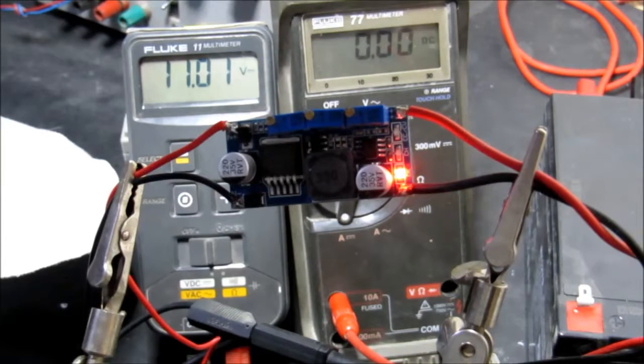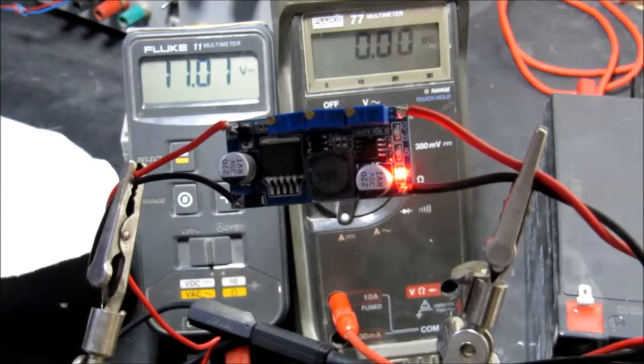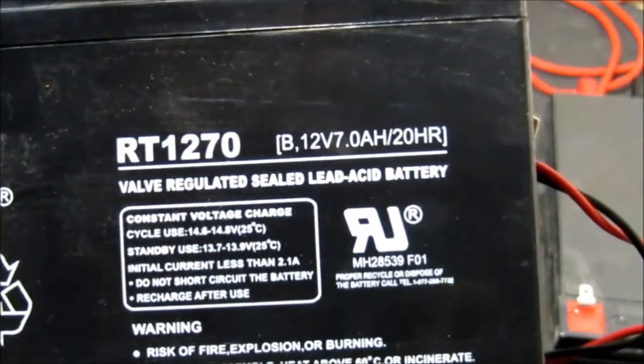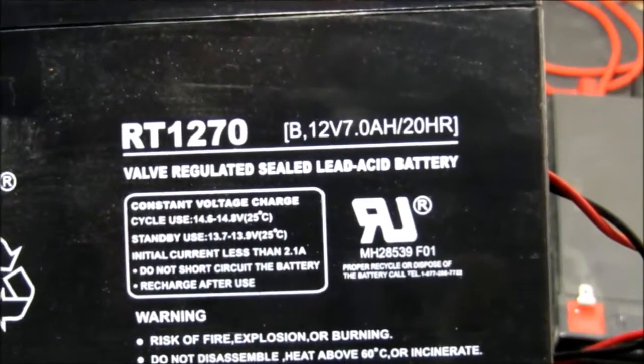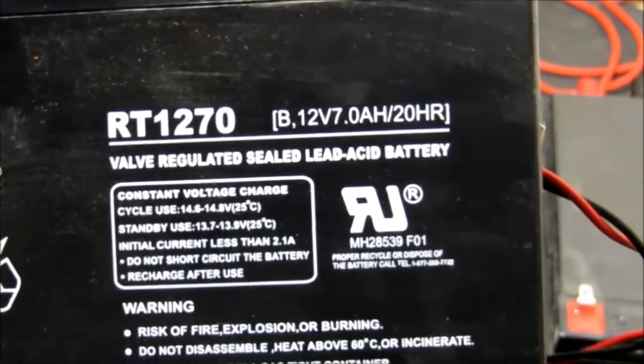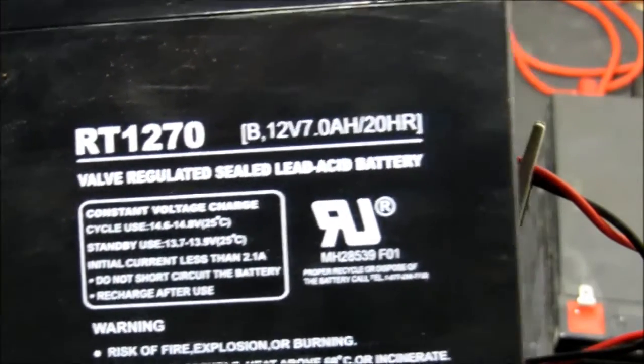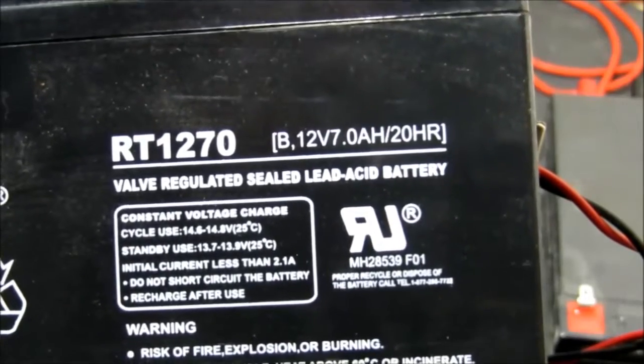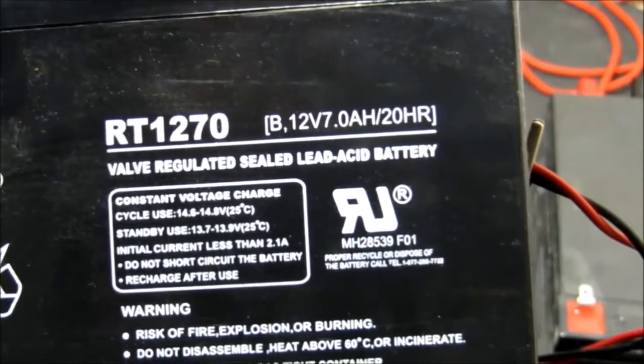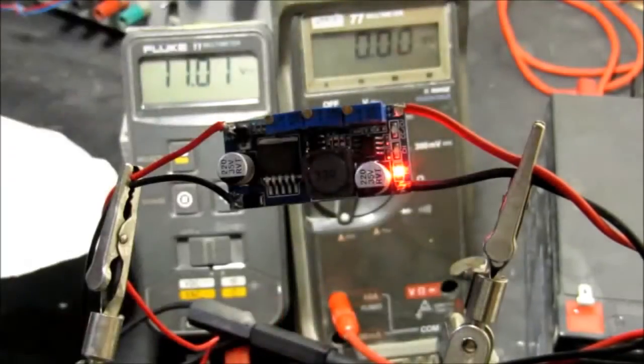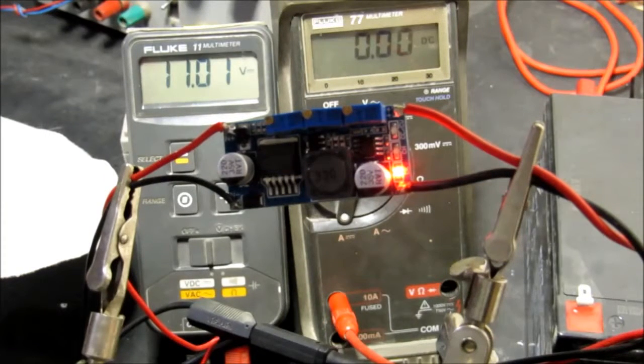The first thing to do in the battery charging mode is to decide what the parameters are for the battery that you're using. In this case it's simple because it's written on the side. In the standby mode, you can use 13.7 to 13.9 volts and initial current less than 2 amps. So 13.7 is going to be the output voltage that we are wanting to set this to.